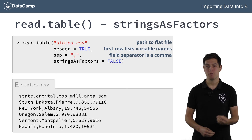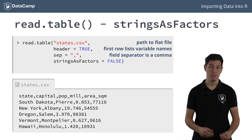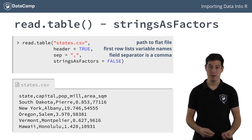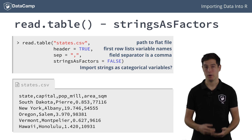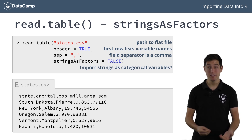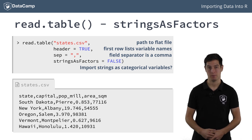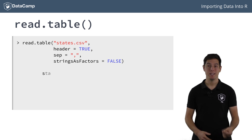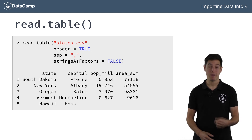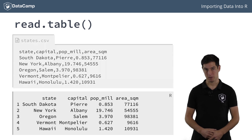Finally, the stringsAsFactors argument is pretty important. It's TRUE by default, which means that columns or variables that are strings are imported into R as factors — the data structure to store categorical variables. In this case, the column containing the country names shouldn't be a factor, so we set stringsAsFactors to FALSE. If we actually run this call now, we indeed get a data frame with five observations and four variables, which corresponds nicely to the CSV file we started with.